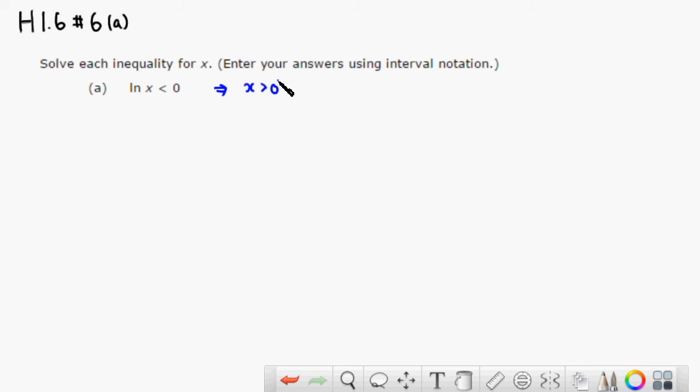Because natural log of 0 doesn't make sense, and natural log of a negative number doesn't make sense. So we have that restriction right from the get-go.